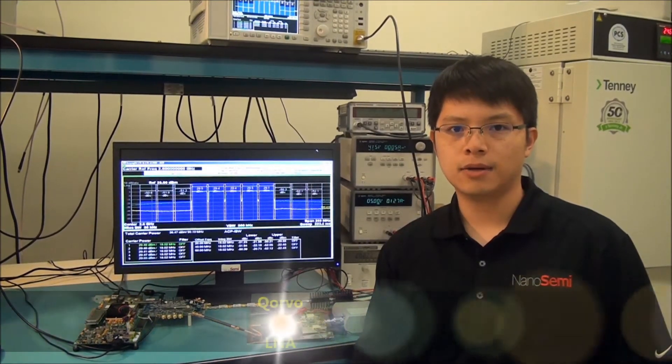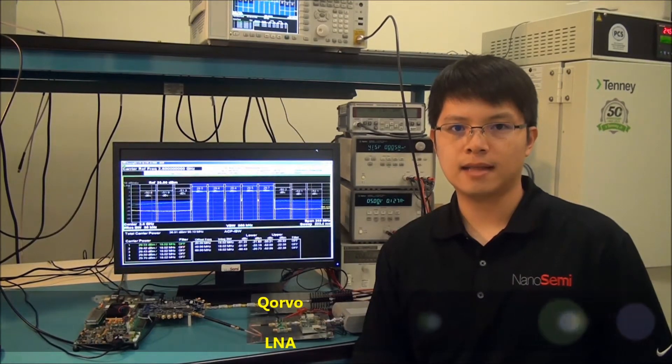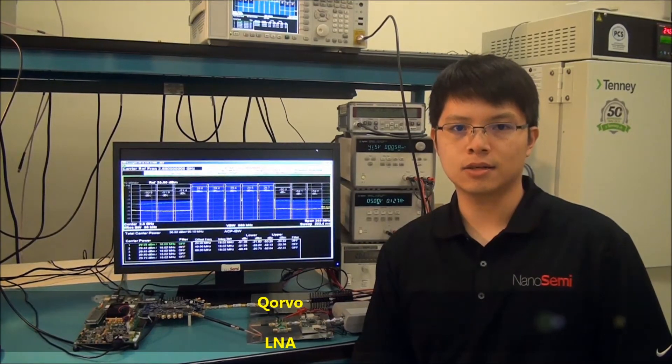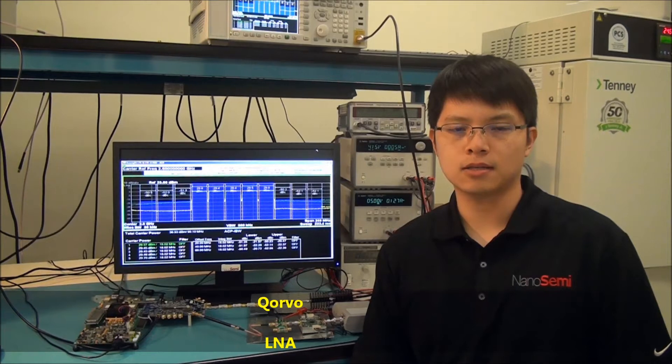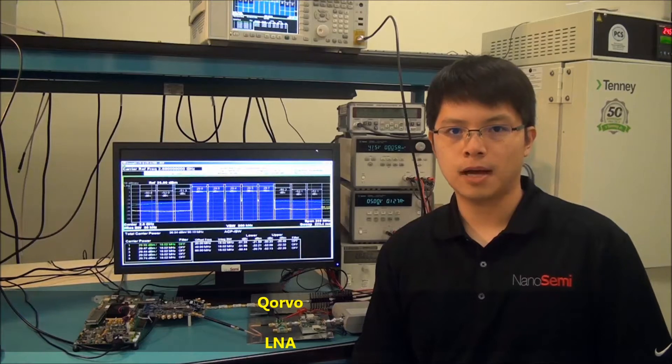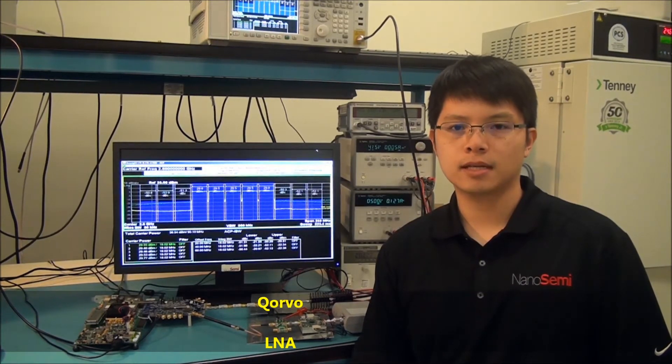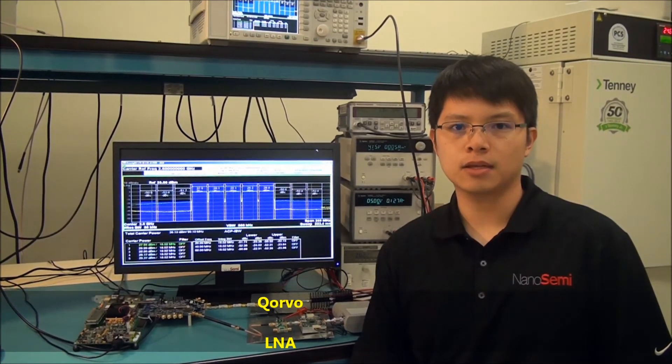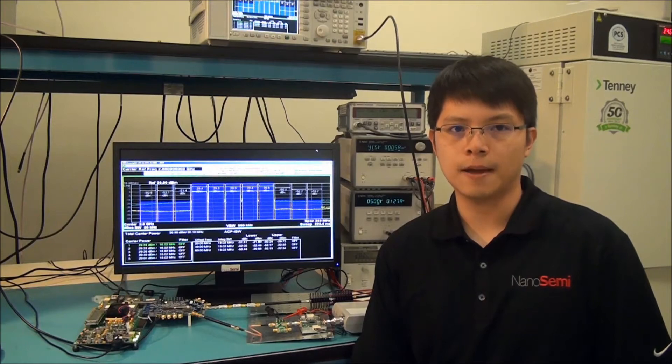Qorvo's TQP3M9035 High Linearity LNA is chosen as the driver between the transceiver and the power amplifier, requiring only one single 5V supply. Its small signal gain is 16 dB with a noise figure of 0.5 dB and its output 1 dB compression is around 22 dBm.